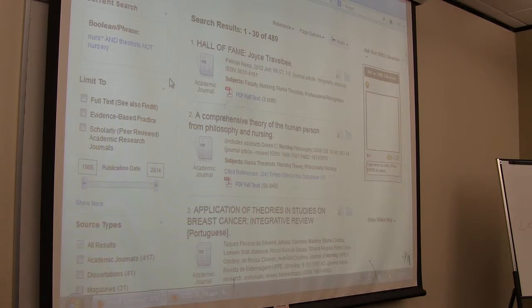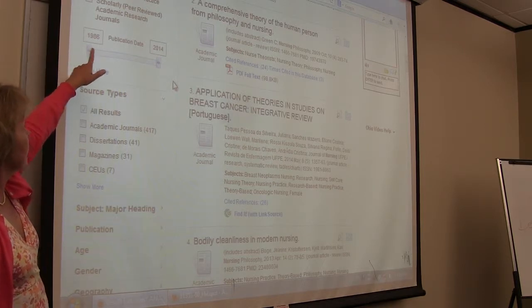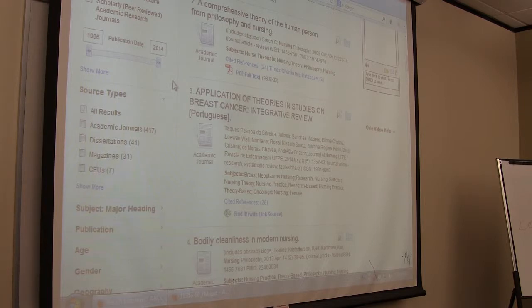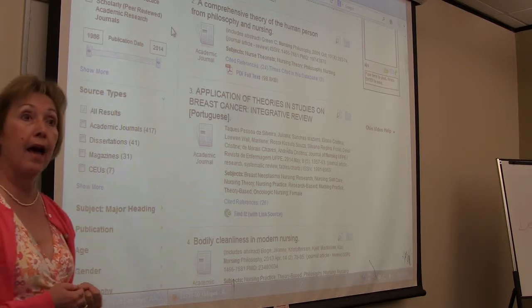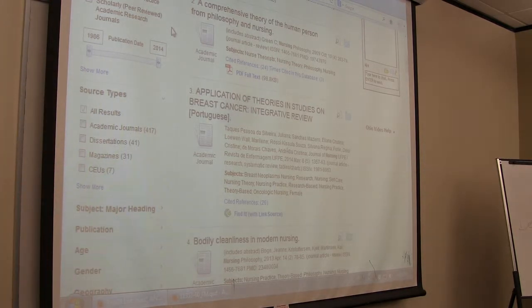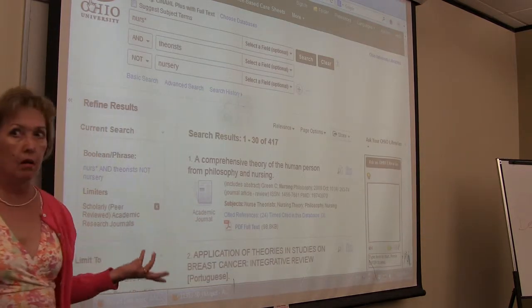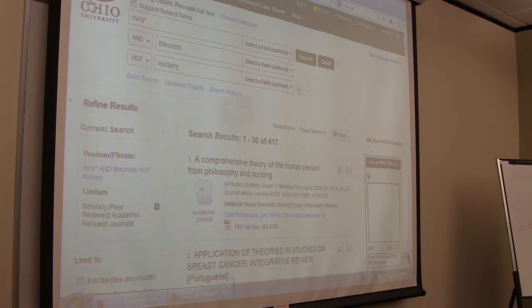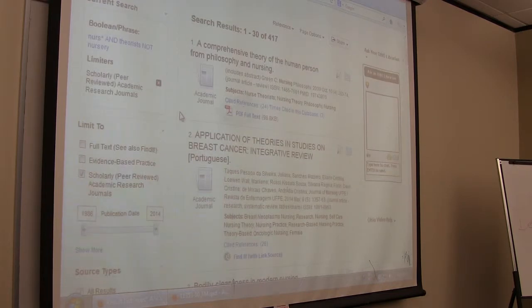So, we can start limiting. Over on the left-hand side, we've got limits, full text, evidence-based practice, and scholarly, peer-reviewed academic research journals. I would say, at this point, don't limit it to full text, because it's going to bring up your full text with just your PDFs that are attached. It won't bring up other options that we might have that is not listed in CINAHL. Evidence-based practice, you could use that, I suppose. But mostly, I think that they're going to want you to write with a peer-reviewed, from a peer-reviewed journal. So, kick everything else out, and then you don't have to worry about is it peer-reviewed or not. What did that give us? 417.